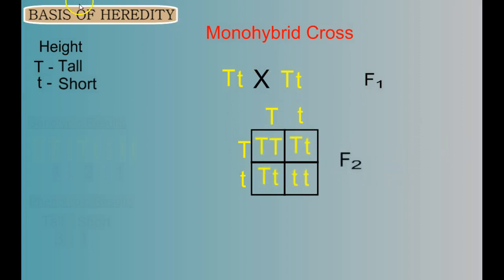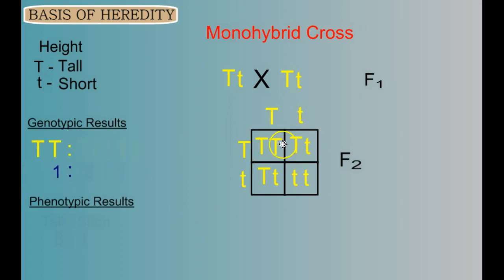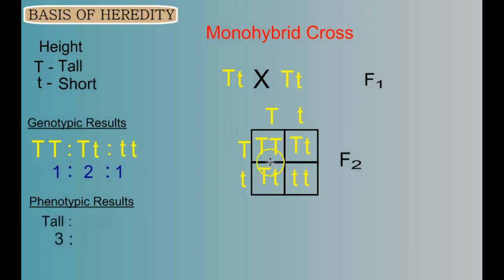This is called a monohybrid cross. When we recombine the gametes, we get these results for our F2 generation. In terms of genotypic results: one box gives TT, two boxes give the heterozygous Tt genotype, and one box gives the homozygous recessive tt genotype — a 1:2:1 ratio. For the phenotypic results, three boxes show tall plants and one box shows a short plant. We can now clearly see why Mendel always produced a 3:1 phenotypic ratio with this series of crosses.